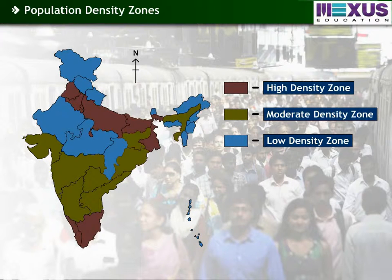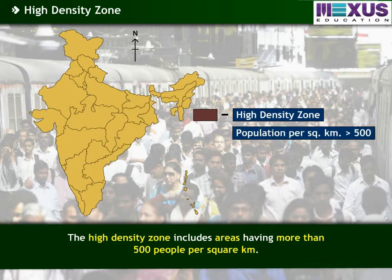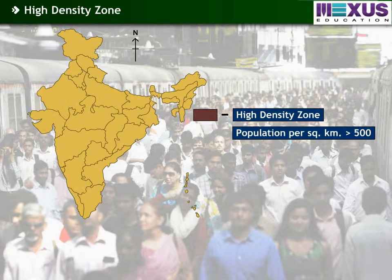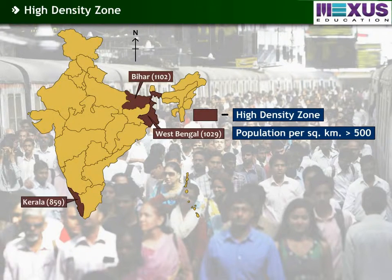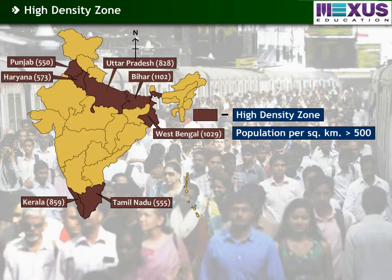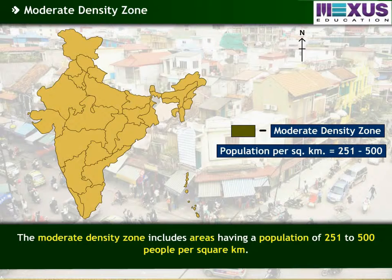The high density zone includes areas having more than 500 people per square kilometer. The states falling under the high density zone are Bihar, West Bengal, Kerala, Haryana, Uttar Pradesh, Tamil Nadu, and Punjab.